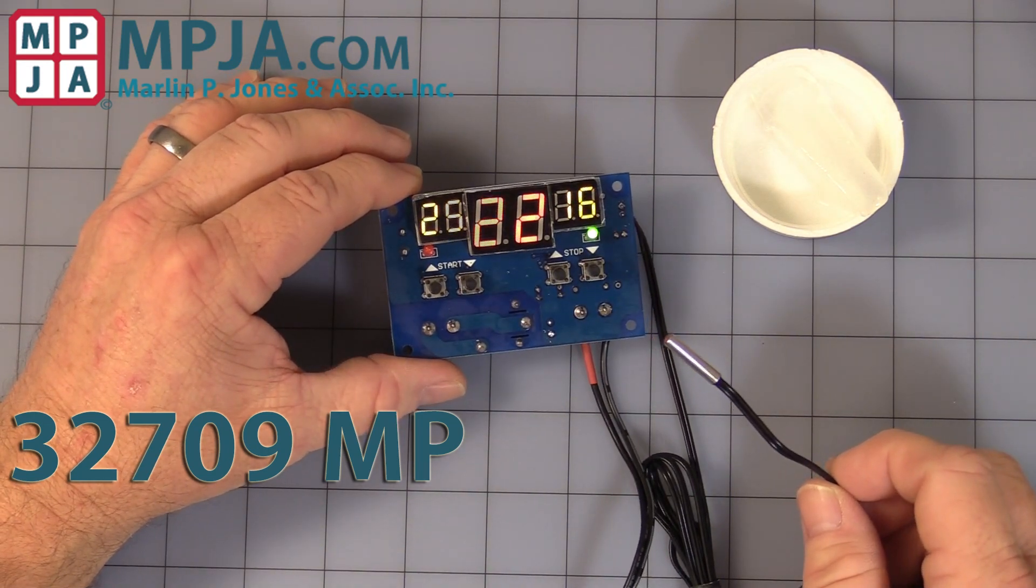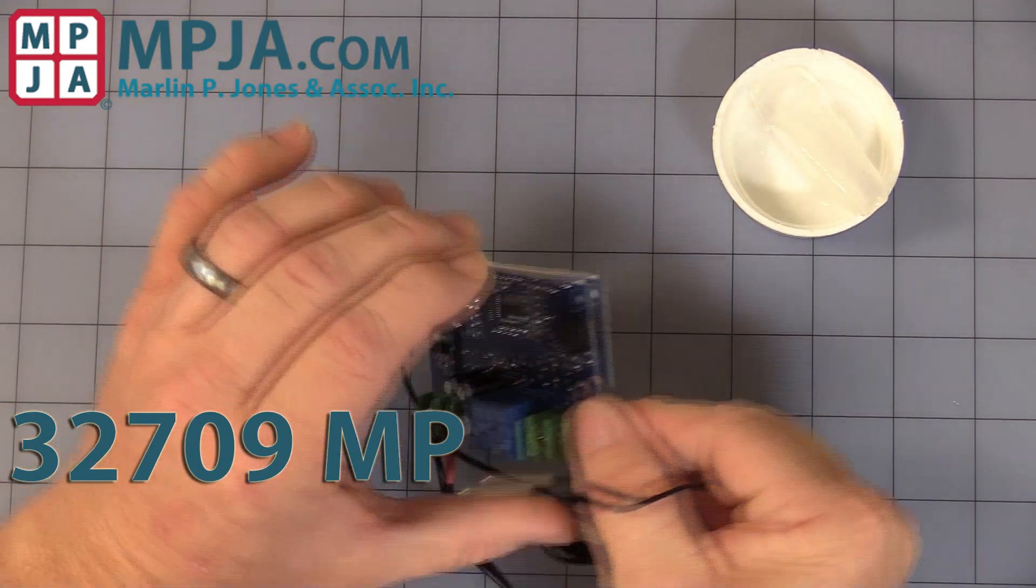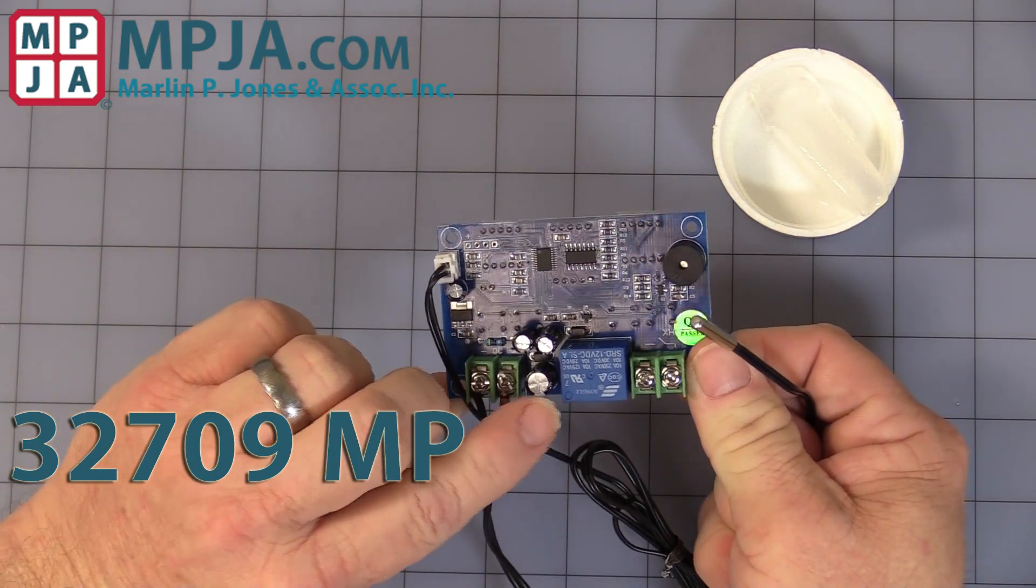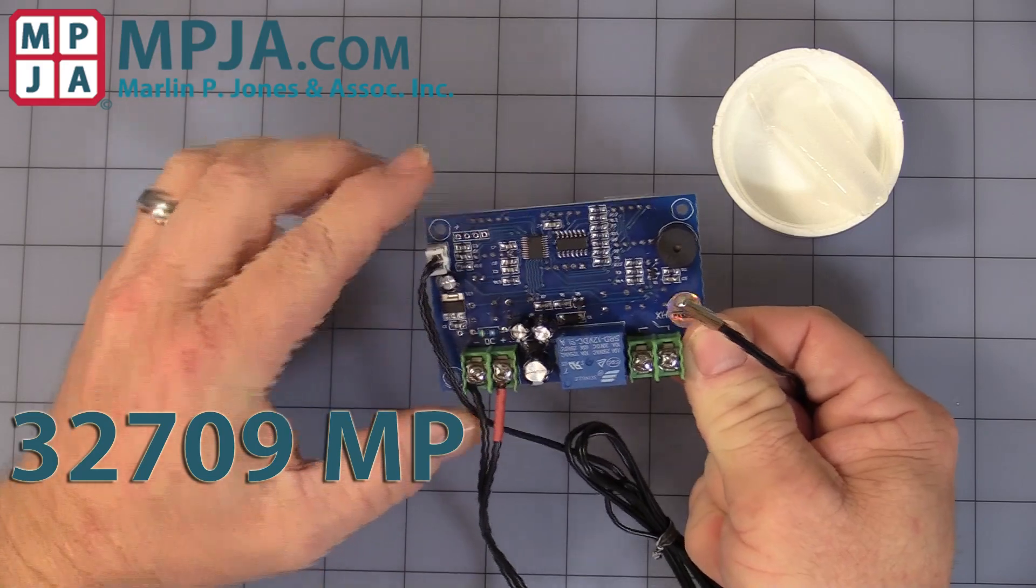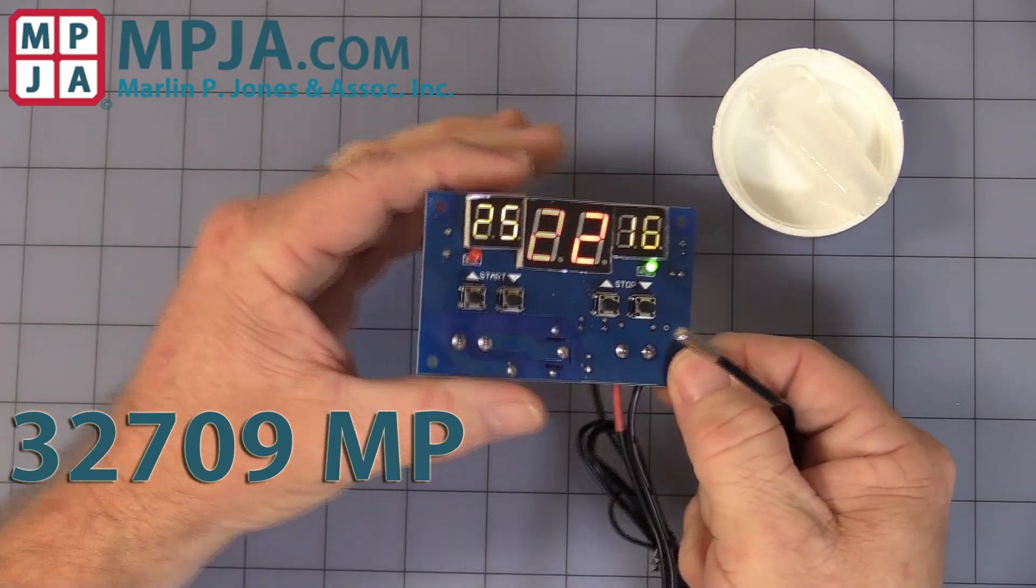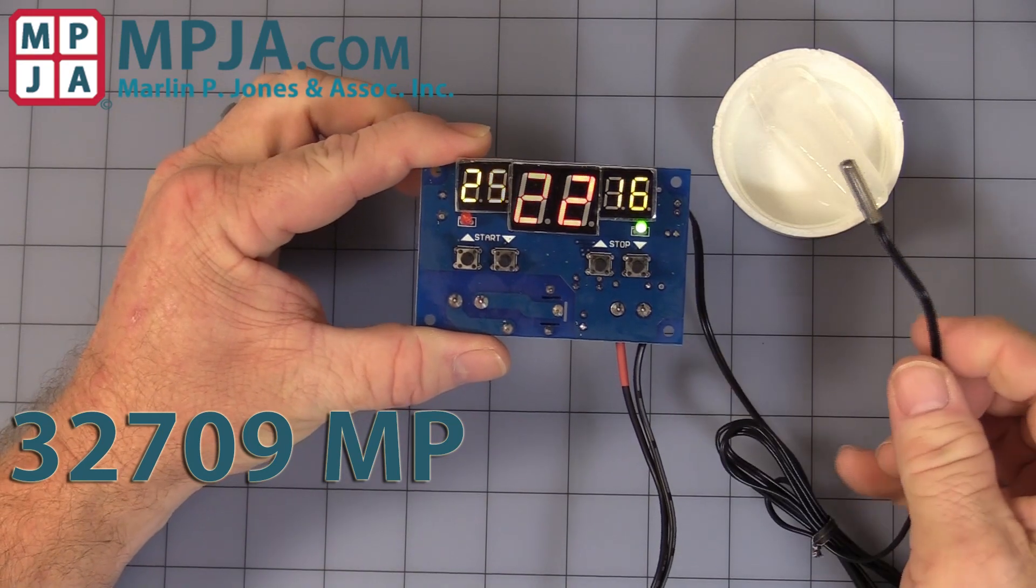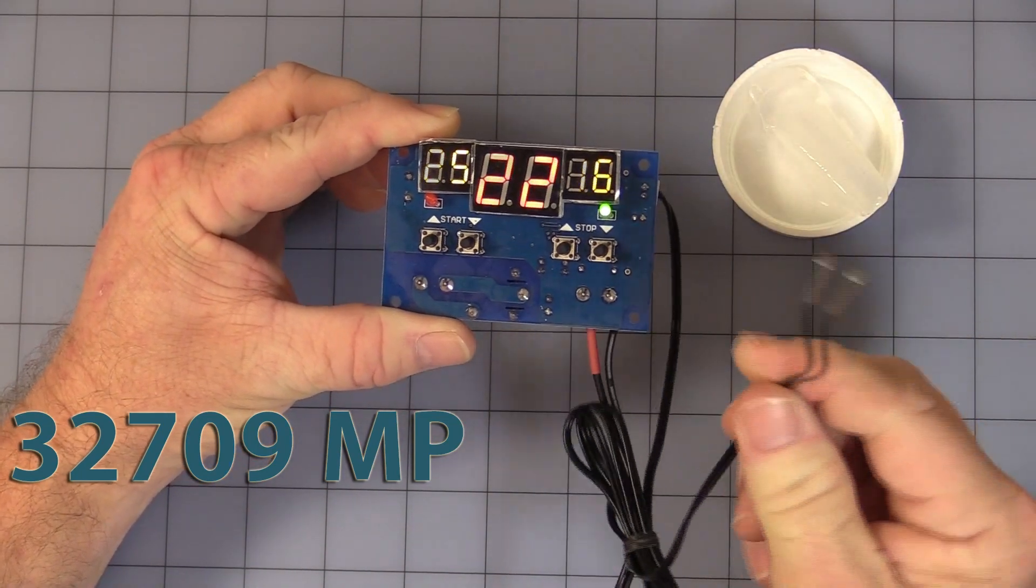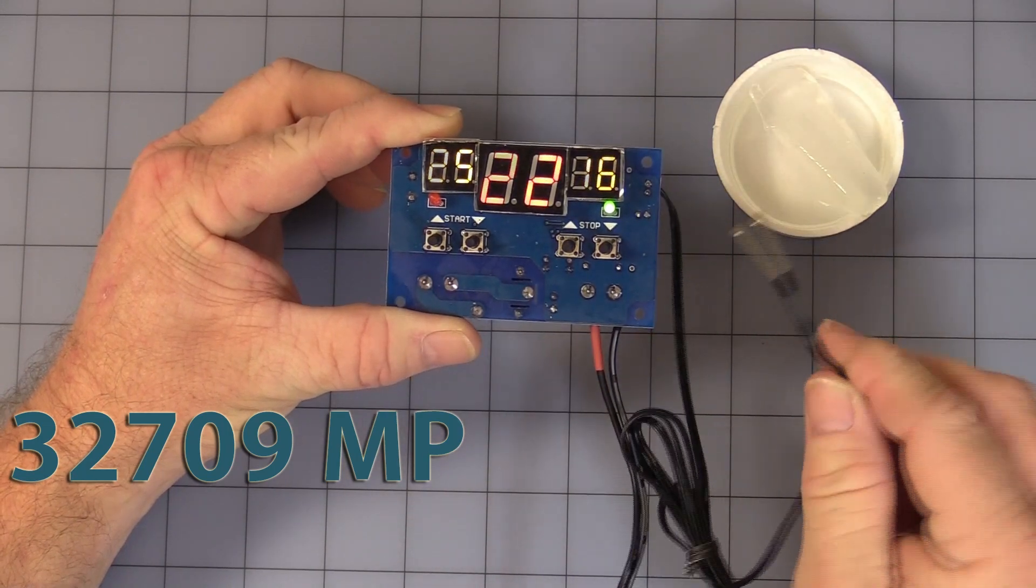It operates off of 12 volts DC. You hook up the terminal block in the back. It has a single pole, single throw, 10 amp relay with a terminal for output. It operates off of minus 9 to 99 degrees Celsius, no Fahrenheit. It has one meter of wire to the probe, so you can remotely mount the probe.